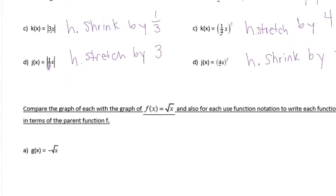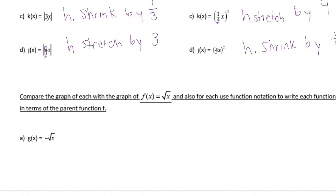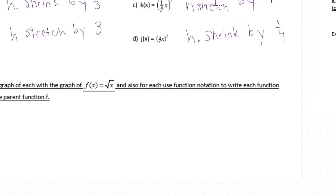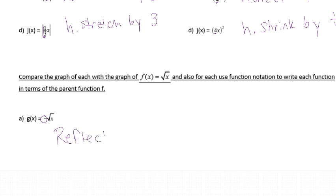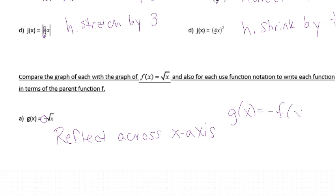Now let's do the square root function. Compare the graph of each to the parent function y equals square root of x. This first one has a negative on the outside, so that's going to be a reflection across the x-axis. In function notation, we would write g of x equals negative f of x.